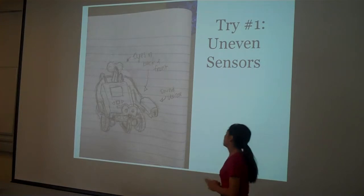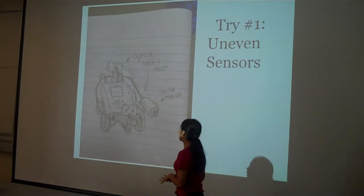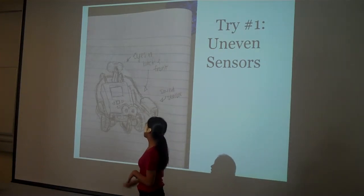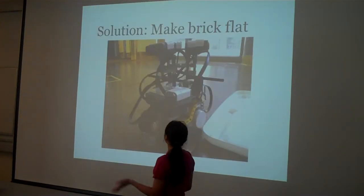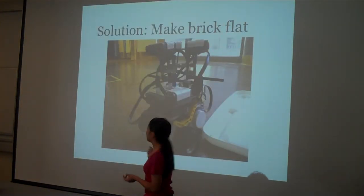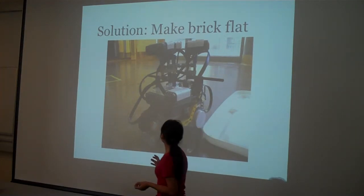So the first thing I tried was, it was kind of a lazy idea. I was like just stick with the old robot and just add a sensor in the back or in the front but actually that wouldn't work and I wanted it to see more. So I made the brick flat instead.